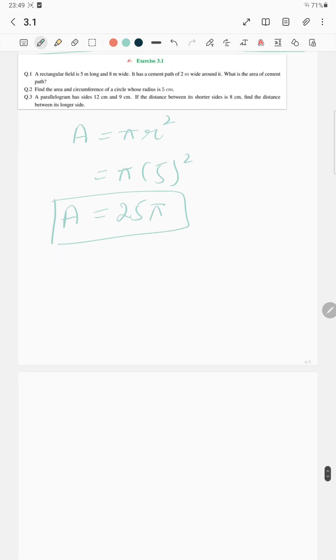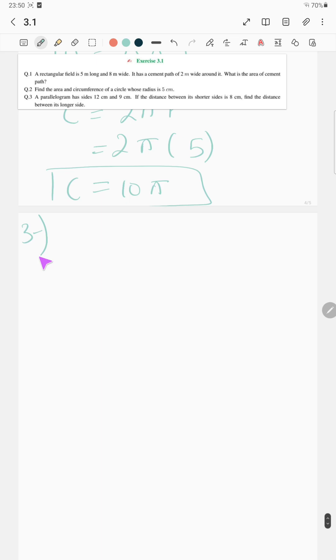And circumference of the circle is 2πr, which is 2π into, what was the radius? 5, and 10π is the circumference of the circle. Question number 3 is: